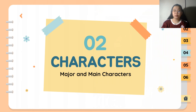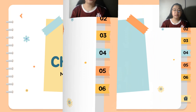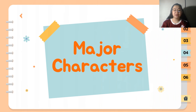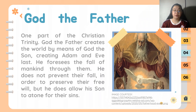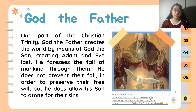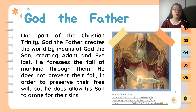Let us now discuss the major characters in the story. For our first character, we have God the Father. One part of the Christian Trinity, God the Father creates the world by means of God the Son, creating Adam and Eve last. He foresees the fall of mankind through them. He does not prevent their fall in order to preserve their free will, but He does allow His Son to atone for their sins.